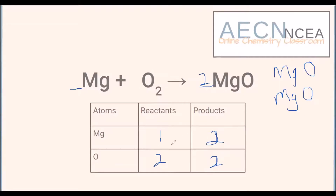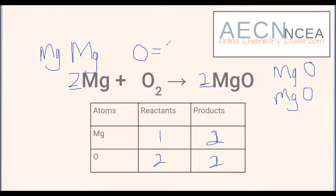We want two oxide ions, so we have to have two magnesium oxides. That means we've got two magnesiums and two oxides. We've balanced our oxygens, but in doing that we've added an extra magnesium and made it unbalanced again. So we now need a two in front of the magnesium reactant as well. And the table is a great visual way to confirm everything is balanced, because balancing one element can knock another out of balance.